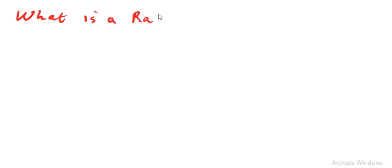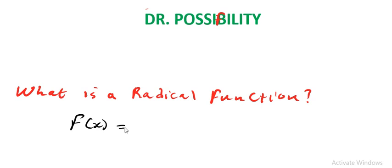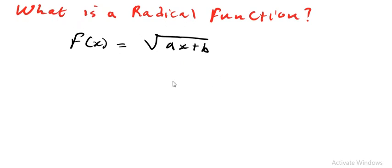So the first thing we need to know is: what is a radical function? A radical function is a function written in the form f(x) = √(ax + b). Any function written in that form is a radical function — it is a function expressed in a square root. It can also be in a cubic root or any other root.